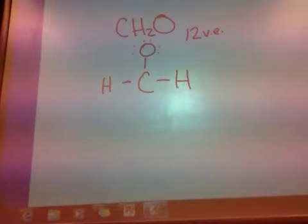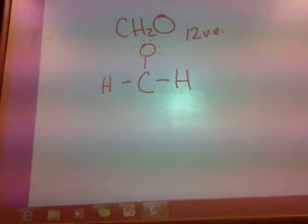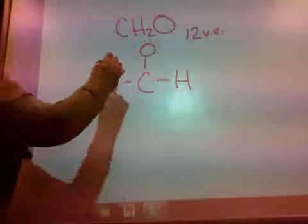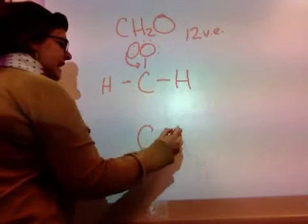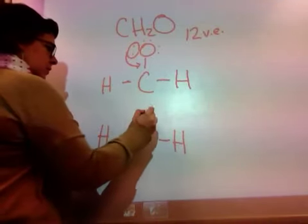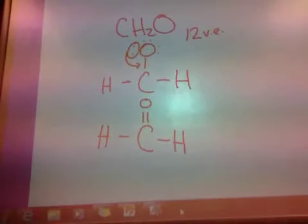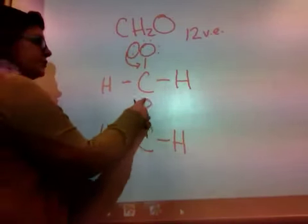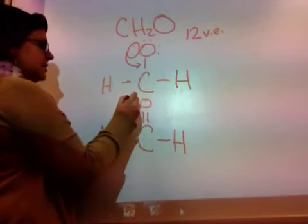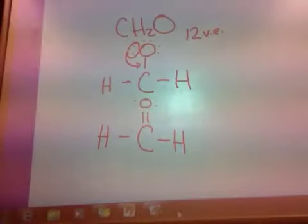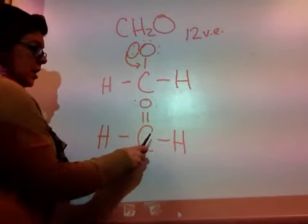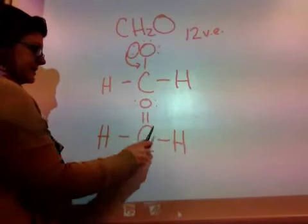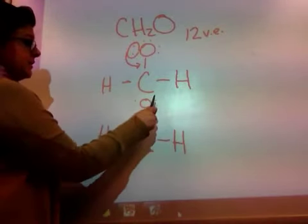Just like in the last problem, what could we do to make carbon have more electrons around it? We want to distribute those electrons evenly, and right now they're not — oxygen is taking over too many. So oxygen could take this lone pair and share it with carbon, making a double bond. I still need to draw the remaining lone pair electrons around oxygen: 1, 2, 3, 4. Checking: hydrogen has 2, hydrogen has 2, carbon has 1 through 8, and oxygen has 1 through 8.